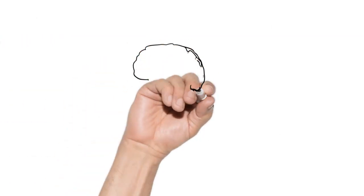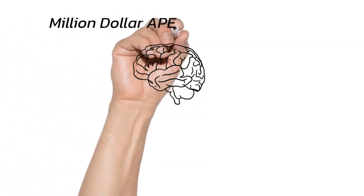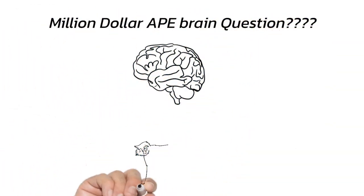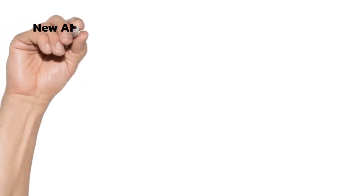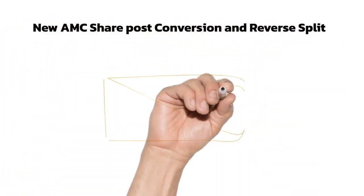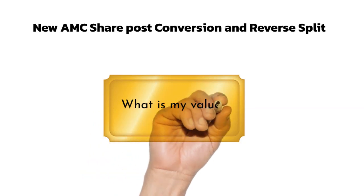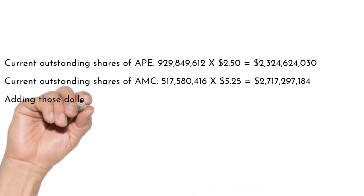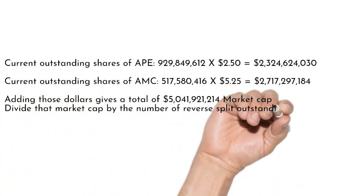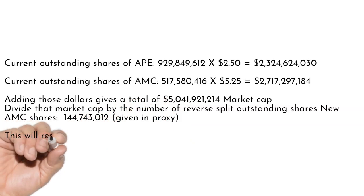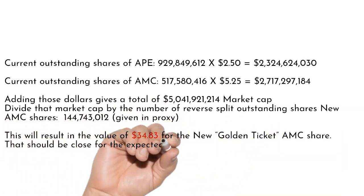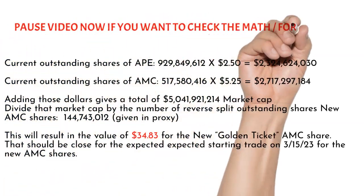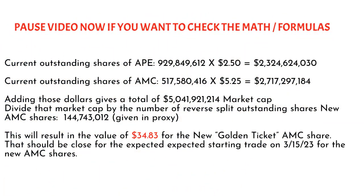So I know what your wrinkly Ape brain is probably thinking? Well, besides what the heck just happened? The million dollar question on most apes' minds is what will be the price of the new AMC share, what we were calling the golden ticket in this lesson. That is not a knowable answer, but we do have a strong inclination as to how that price will get calculated. Some smart apes have suggested this will be the formula used to derive the price for the golden ticket share. This obviously gets a bit in the weeds, but if you want you can pause this video and look closer at the numbers and formula on the screen. Bottom line, $34.83 is a decent expected starting point when trading on March 15, 2023 begins.